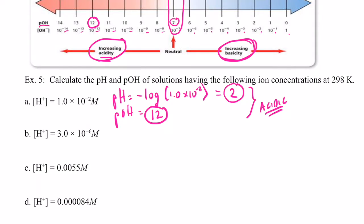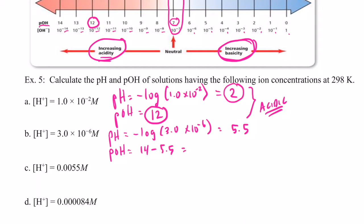Alright, let's do letter B. The pH of this solution is going to be the negative log of 3.0 times 10 to the negative sixth. So on our calculators: negative log, 3 second EE negative 6, enter. And I get 5.5 as my pH. Now the pOH is going to be 14 minus 5.5, because the sum of the two will always have to equal 14. And so that equals 8.5. Since the pH is lower than 7, the solution is also acidic.